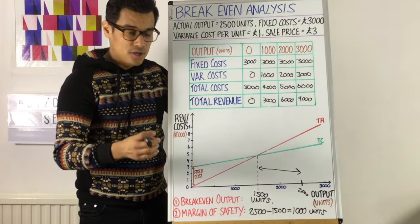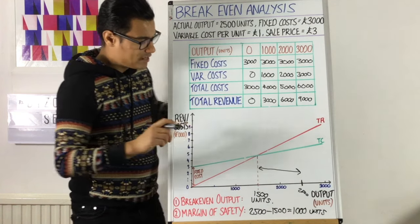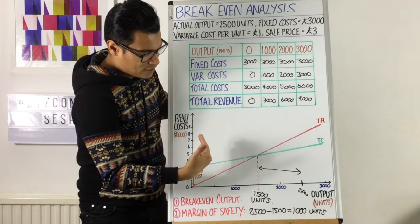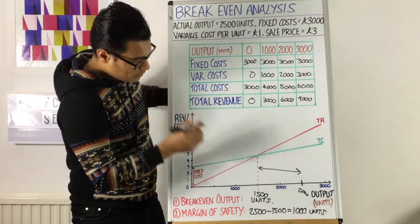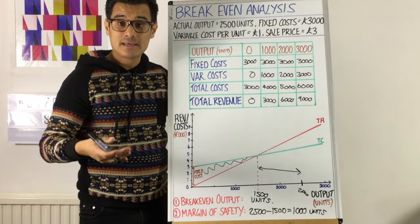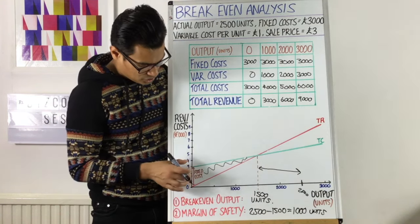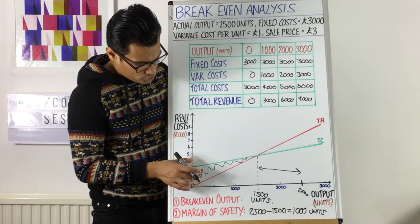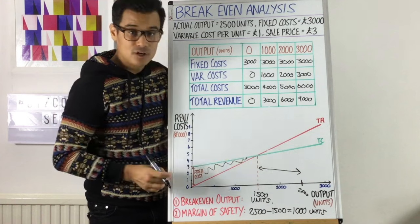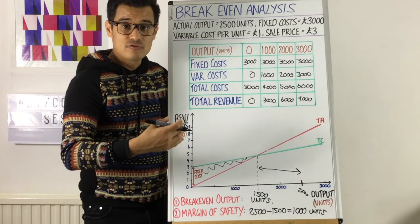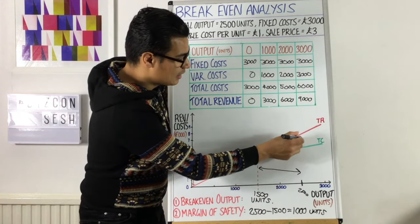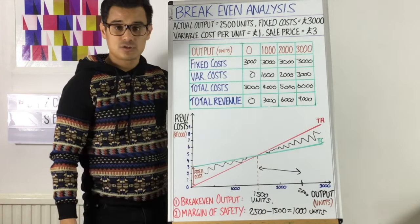Important things to also know is if you take the breakeven point that is here, everything to the left, so when you make less units, the gap here, that would be making a loss. That symbolizes the loss. And it also shows you that as you make more units, your loss is getting less until you hit your breakeven point. And every unit thereafter, you start to make a profit. And the profit is widening as you make more units in this situation.